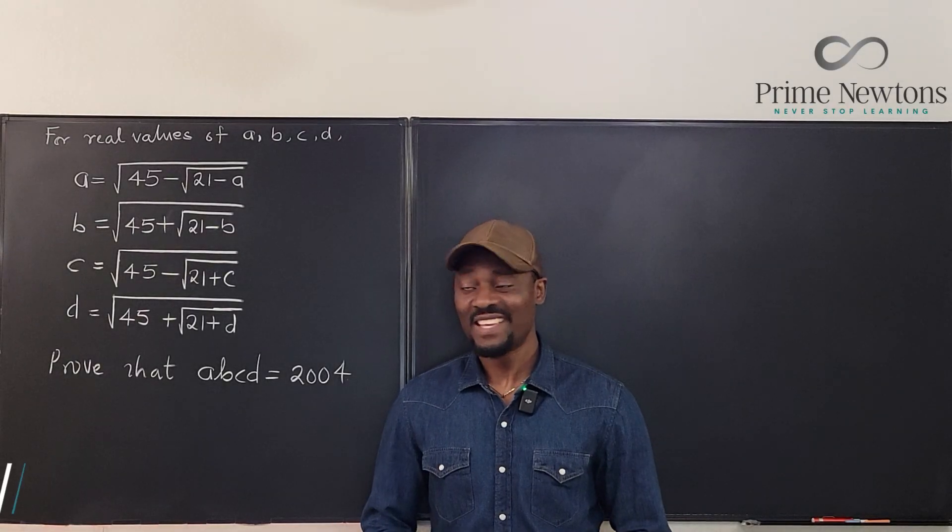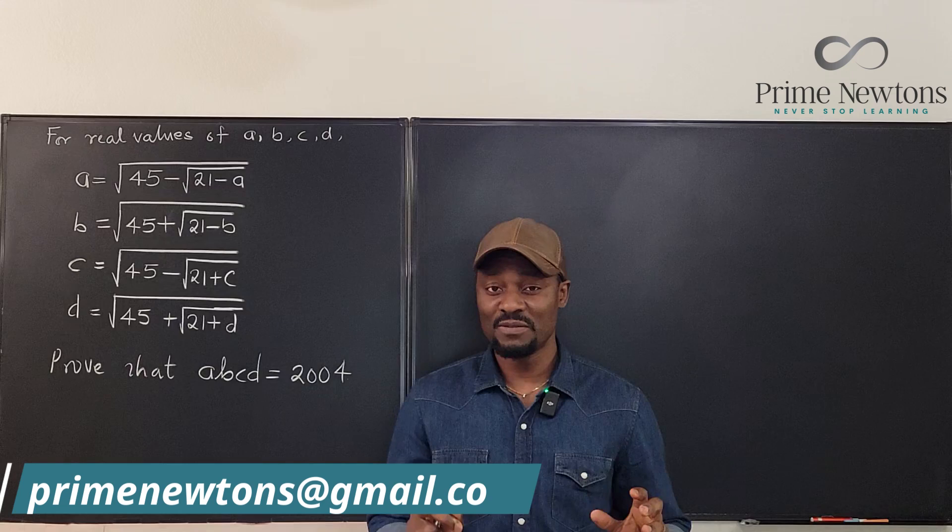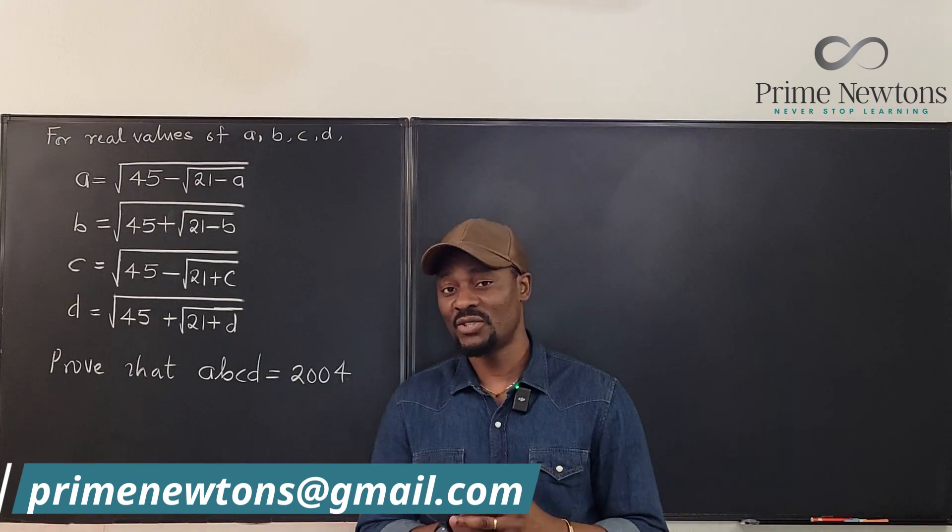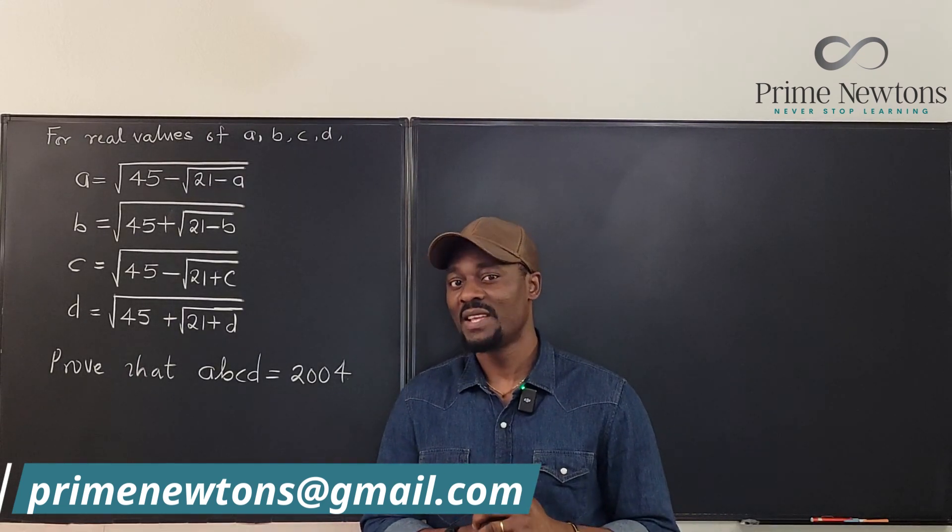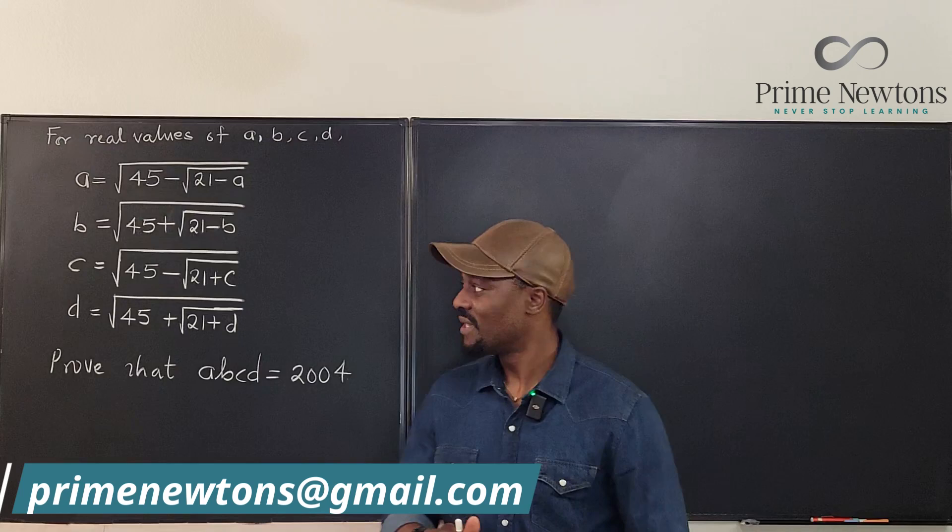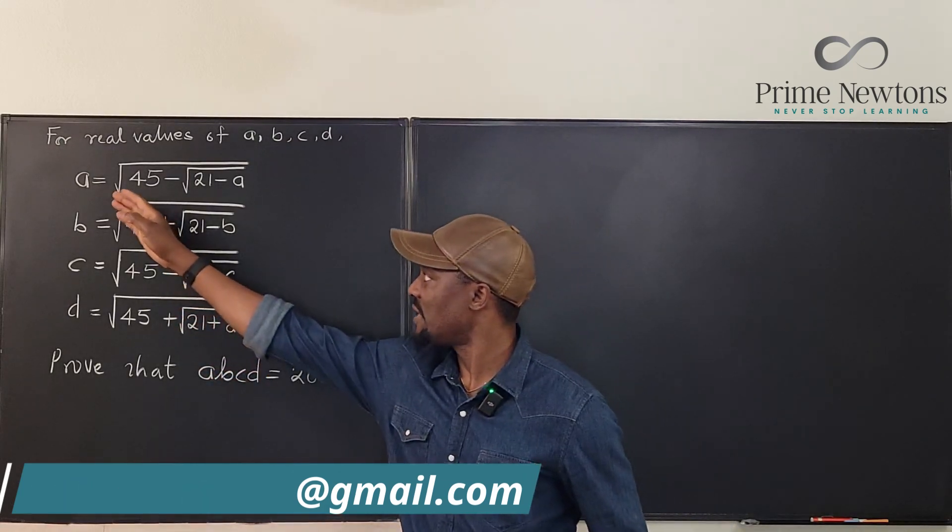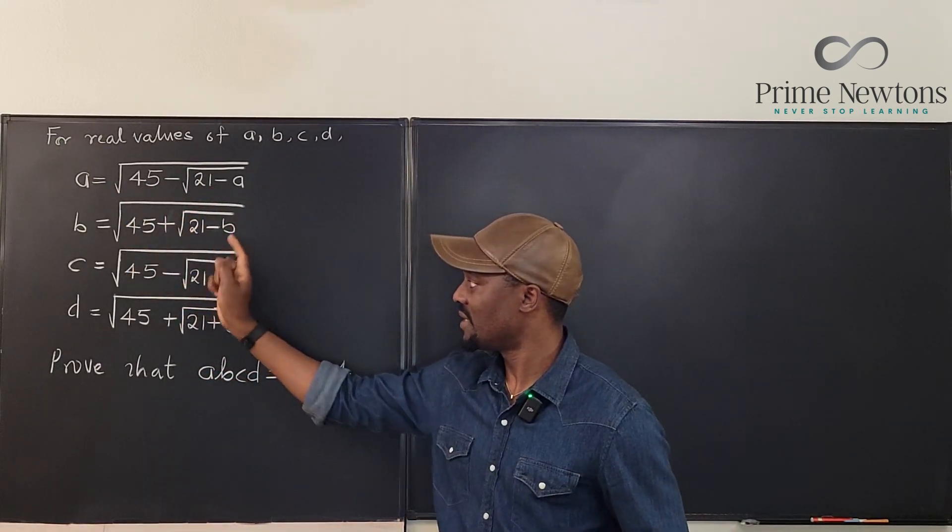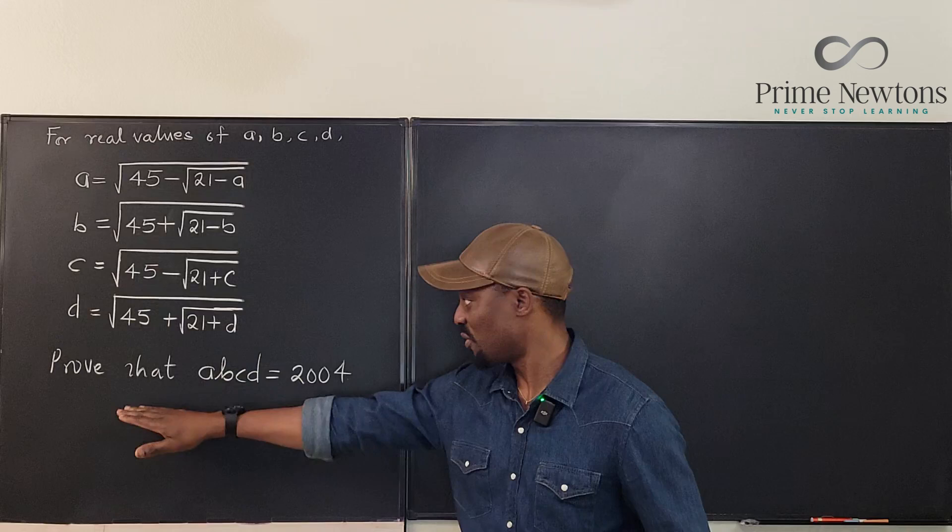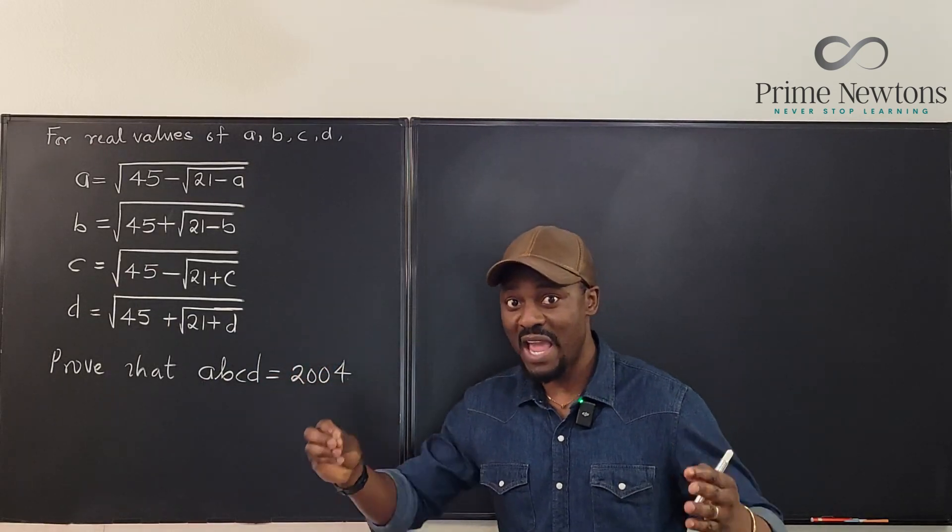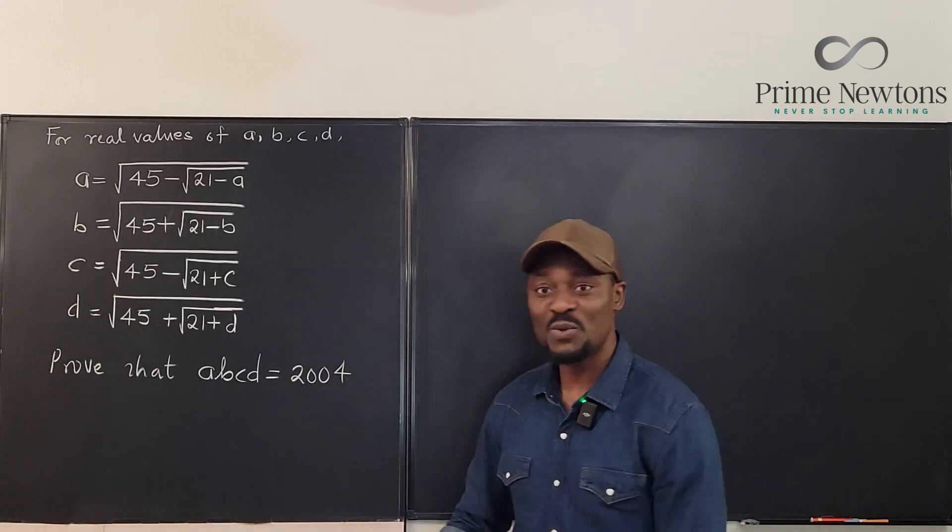Welcome to another video. This is a 2004 Switzerland team selection test problem, and all we have to show is that if we're given A to be this and B to be this, C is this, D is this, just prove that the product of A, B, C and D is 2004.